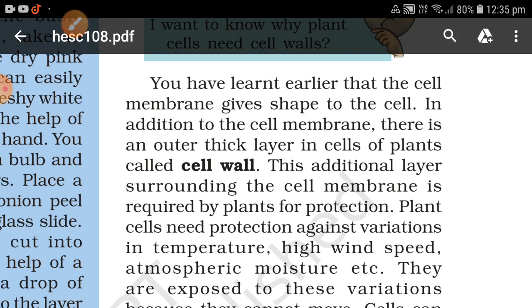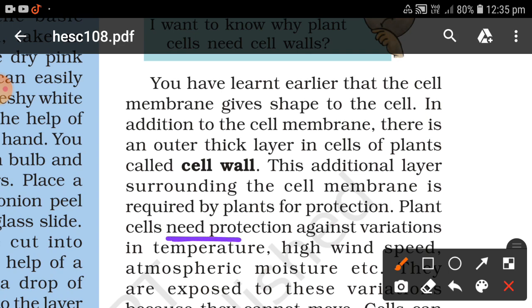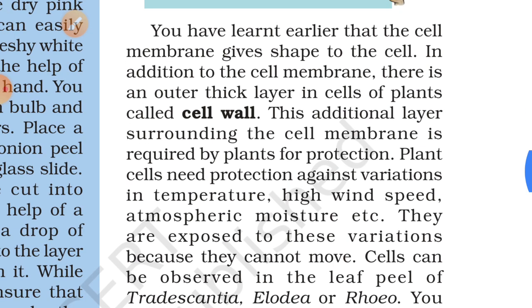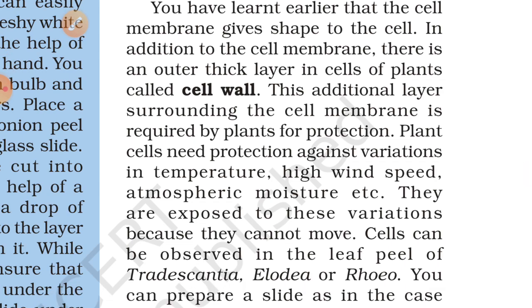Plant cells need protection against variation in temperature, high wind speed, and atmospheric moisture. Plants need this protection because they are exposed to these variations and cannot move. Cells can be observed in the leaf peel of certain plants.